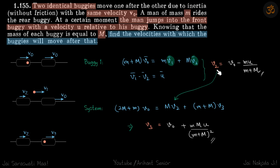Now we need to find v3. For that, we can do it in two ways: we can either conserve the momentum like this, or the easier way is to conserve the momentum of the whole system.